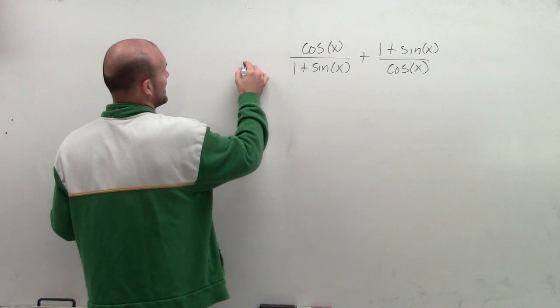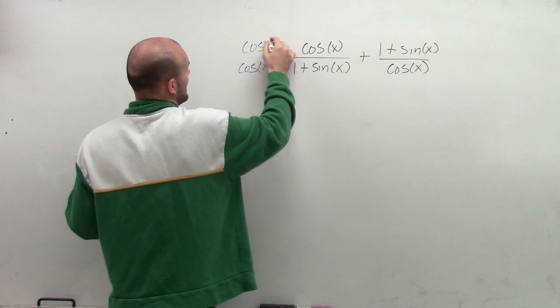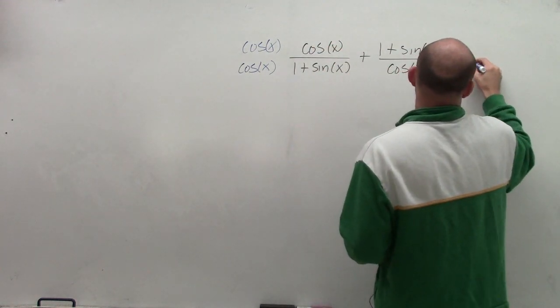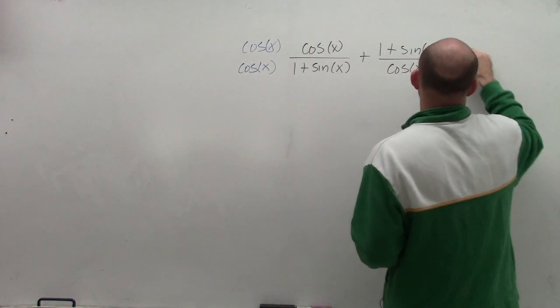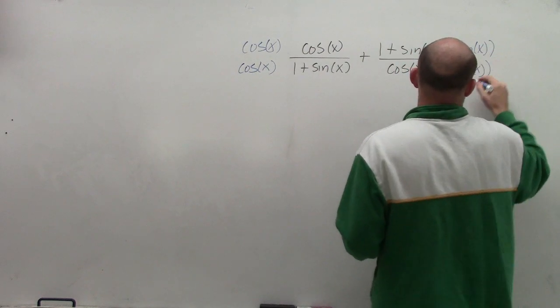So I multiply by cosine of x on the numerator and denominator on the left side. And then I multiply by 1 plus sine of x on the right side.